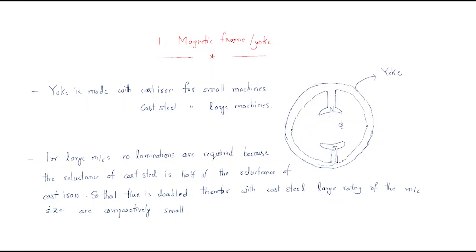The first part is the magnetic frame or yoke. The yoke is made with cast iron or cast steel. Cast iron is used for small machines, and cast steel is used for large machines. Cast steel has less reluctance for magnetic flux, whereas cast iron has more reluctance compared to steel.